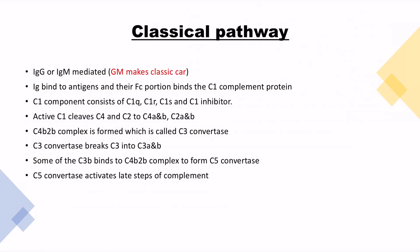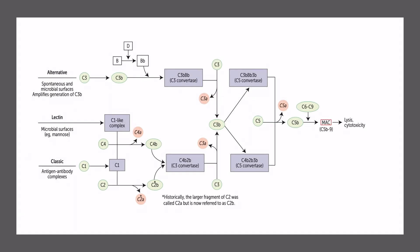So guys, what is a classical pathway? Classical pathway is mediated by IgG or IgM. Immunoglobulins bind to antigens and their FC portion binds the C1 complement protein. This is a beautiful picture from first aid. As you can see, the classical pathway requires antigen-antibody complexes. Now active C1 is made from a C1 complement. You have to know that C1 complement consists of four parts: C1Q, C1R, C1S, and C1 inhibitor.